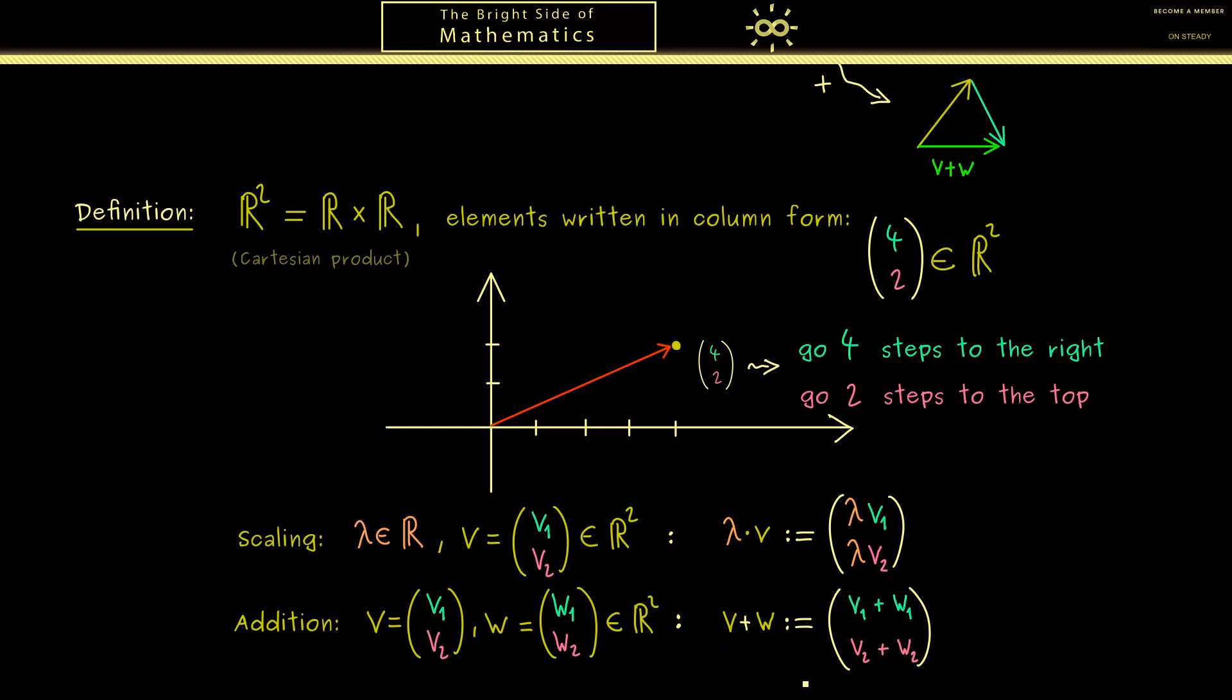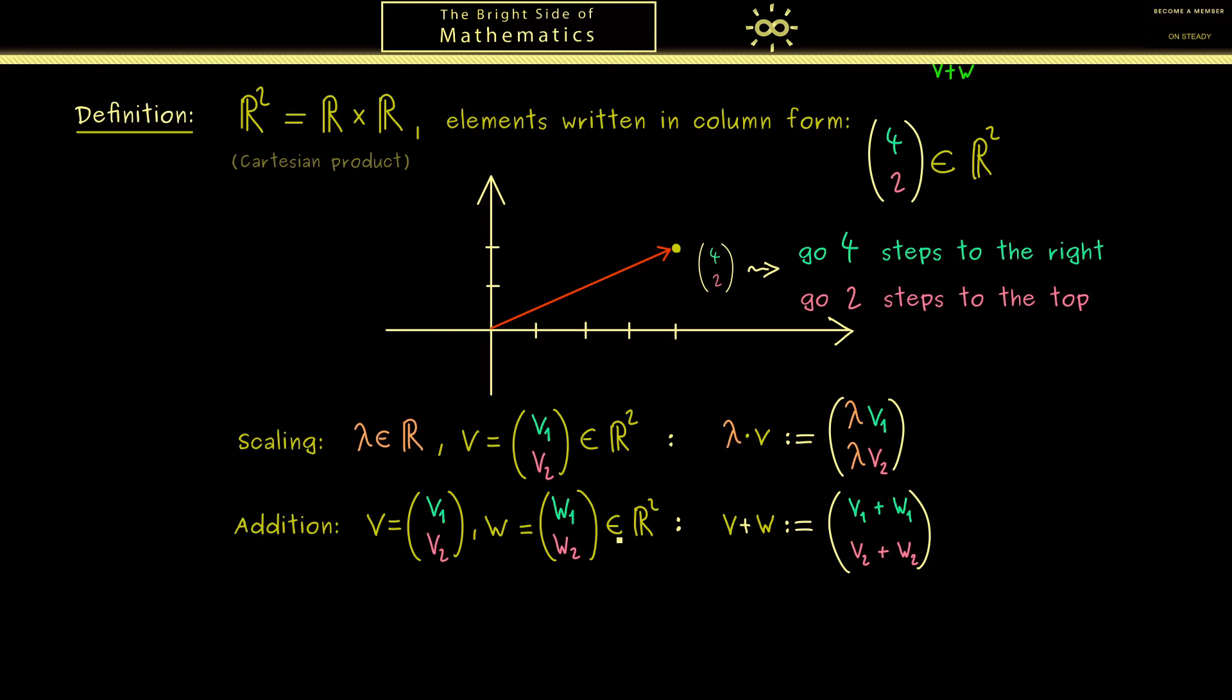Okay with this we have our first definition: the set R2 together with these two operations is called the vector space R2. Hence we can immediately calculate in this new vector space. And then all the calculations make sense because we have defined the objects now. Some calculations and why this is interesting I show you in the next video when we talk about linear combinations. Therefore I hope I see you there and have a nice day. Bye.